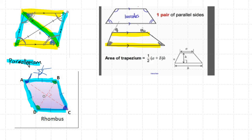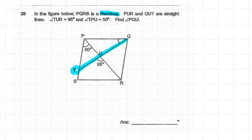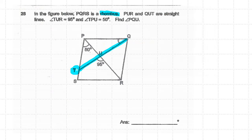Let's go back to this problem. It says this is a rhombus, and PUR is a straight line. This other line is also straight. Notice that this line cuts through here — and I said the diagonal cuts the angle into half. But in this case, that line did not actually cut through the vertex, so that property does not apply here.